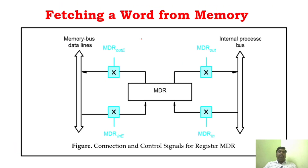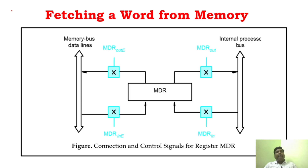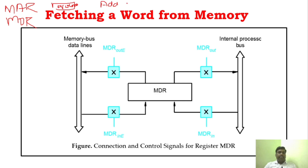We will start with fetching a word from the memory. From the name itself we can understand — fetching a word from memory means we are going to get some information from the memory. We already know the basic operation of the processor and how instructions are executed. There is something called the fetch phase and the execution phase. You know there is something called MAR — memory address register — and MDR — memory data register.